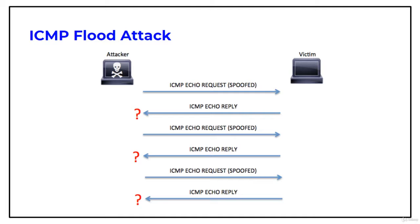These packets signal the victim system to reply, and the combination of traffic saturates the bandwidth of the victim's network connection, thereby causing it to be overwhelmed and subsequently stop responding to legitimate TCP/IP requests. To protect against ICMP flood attack, set a threshold limit which, when exceeded, invokes the ICMP flood attack protection feature.